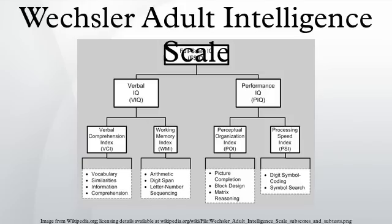The WAIS-III, a subsequent revision of the WAIS and the WAIS-R, was released in 1997. It provided scores for verbal IQ, performance IQ, and full-scale IQ, along with four secondary indices. Verbal IQ included seven tests and provided two sub-indexes: verbal comprehension and working memory. The verbal comprehension index included: information, similarities, and vocabulary. The working memory index included: arithmetic, digit span, and letter-number sequencing. Comprehension is not included in these indices, but is used as a substitution for spoiled subtests within the WMI and VCI respectively.